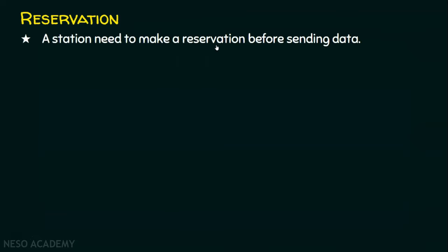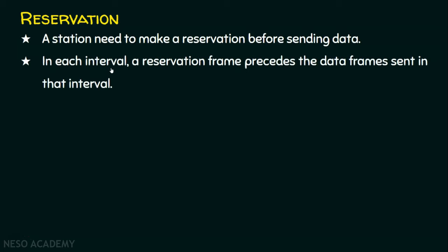A station needs to make a reservation before sending data — sending data is like travelling in the previous analogy. So, any station that wishes to send data must make a reservation first. The reservation method has many time intervals, and in each interval a reservation frame precedes the data frames sent in that interval. If there are n stations, how is this reservation done?